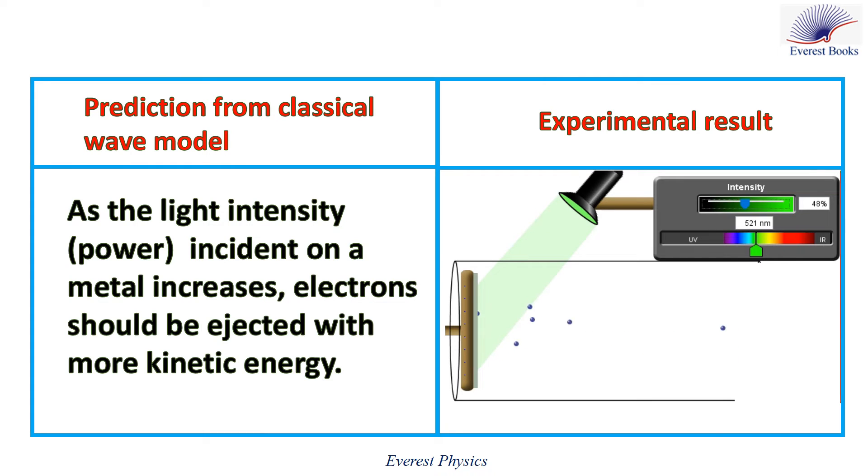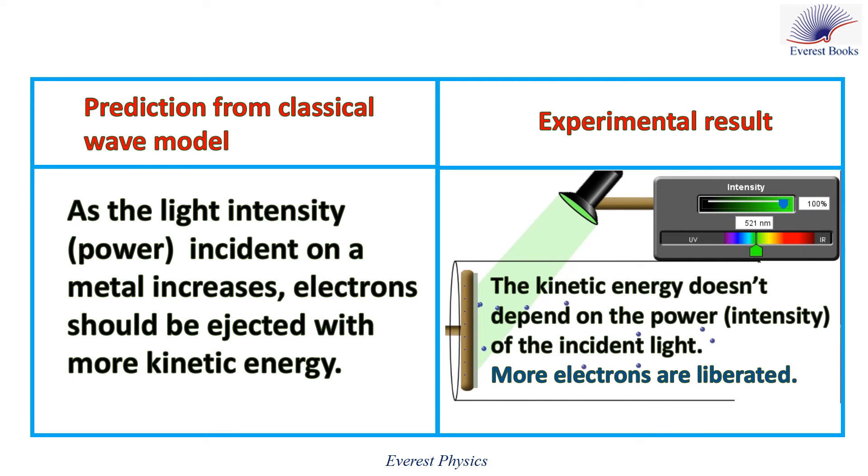But according to the experimental result, using this PhET simulation, as the intensity or power of the incident light increases, the speed or kinetic energy of each electron does not change. The kinetic energy does not depend on the power or intensity of the incident light. Only more electrons are liberated when we increase the power.